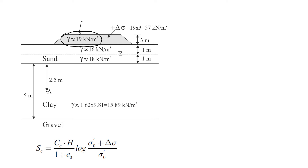Now we can calculate the additional stress generated by the construction of the embankment. We use the formula: unit weight of the material times the thickness. The unit weight of the embankment soil is 19 kN/m³ and the thickness is 3 meters, giving us 57 kN/m². This is the additional effective stress that will be applied to the clay layer.